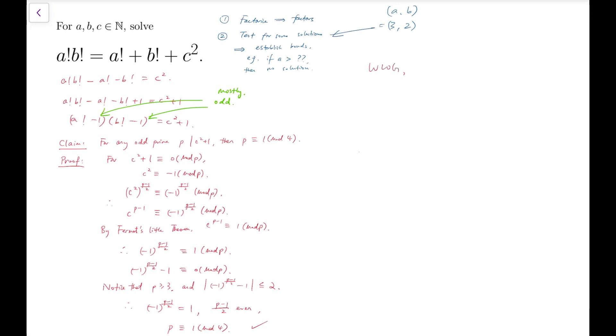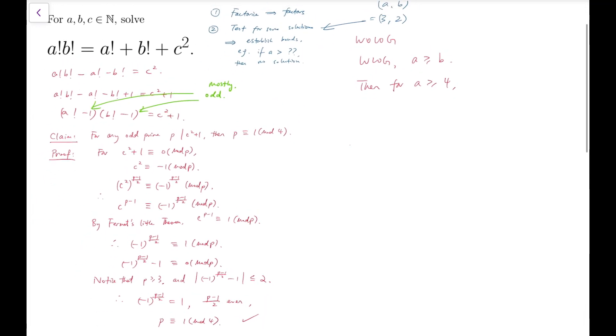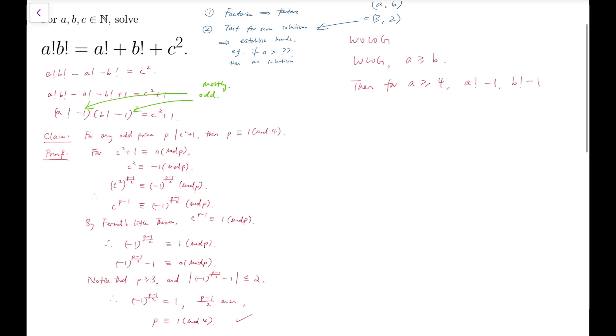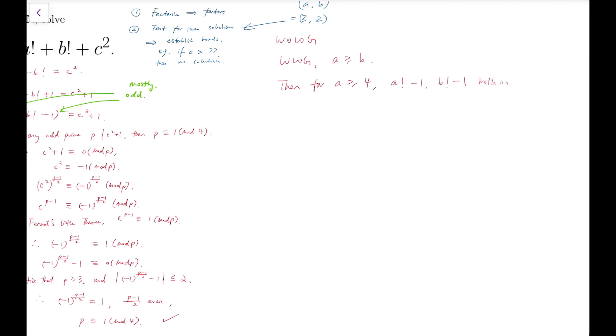So by symmetry, without loss of generality, I assume that a is larger than or equal to b, so that means by symmetry I assume that a is a larger number. Then, in the case a is at least 4, I know that a! - 1 and b! - 1 must be odd. So they only have odd prime factors.